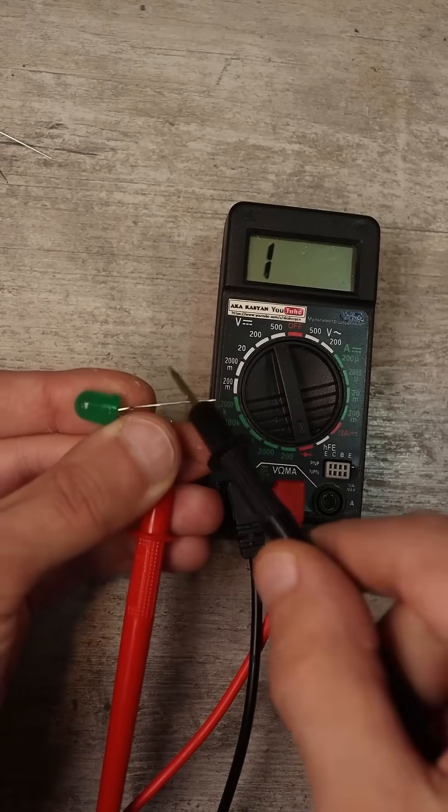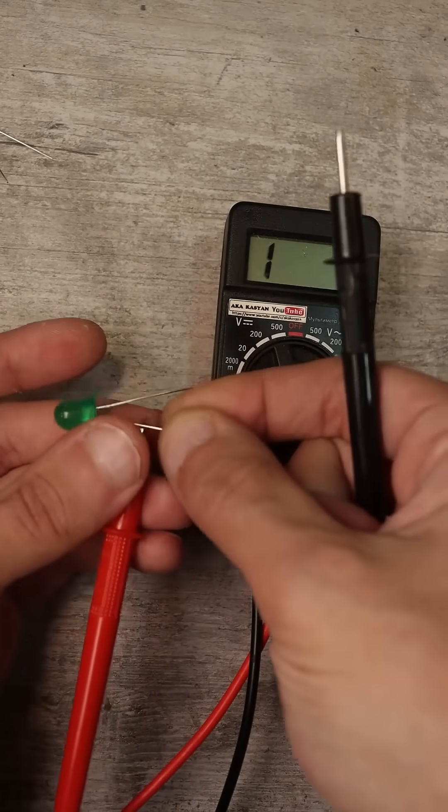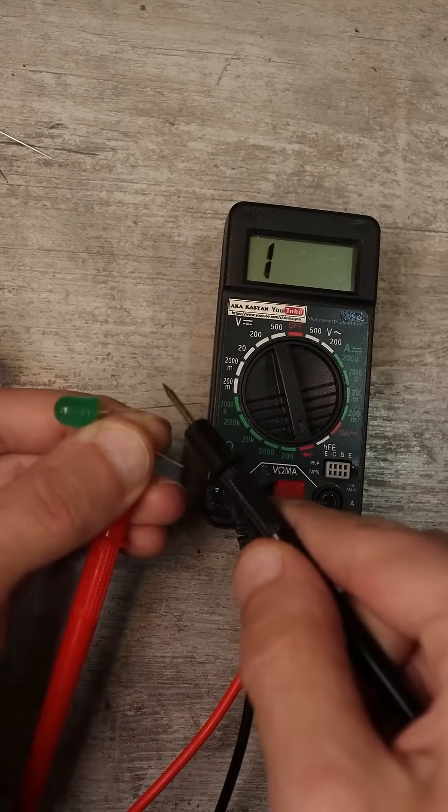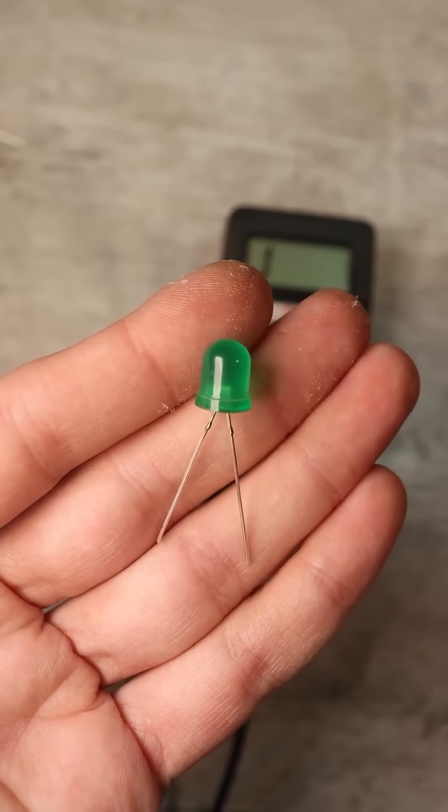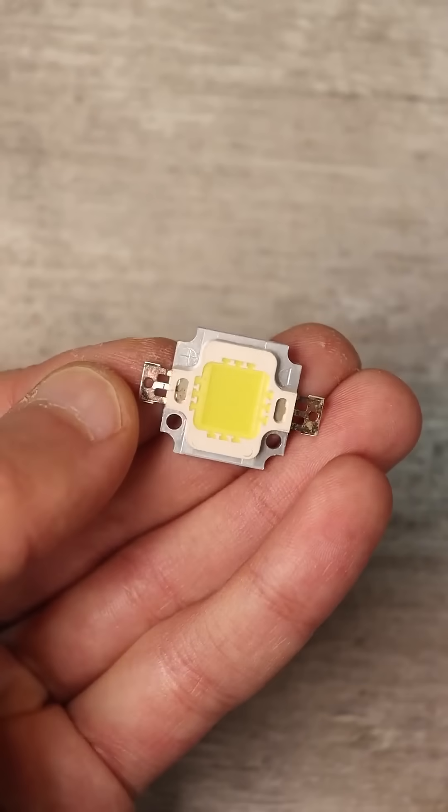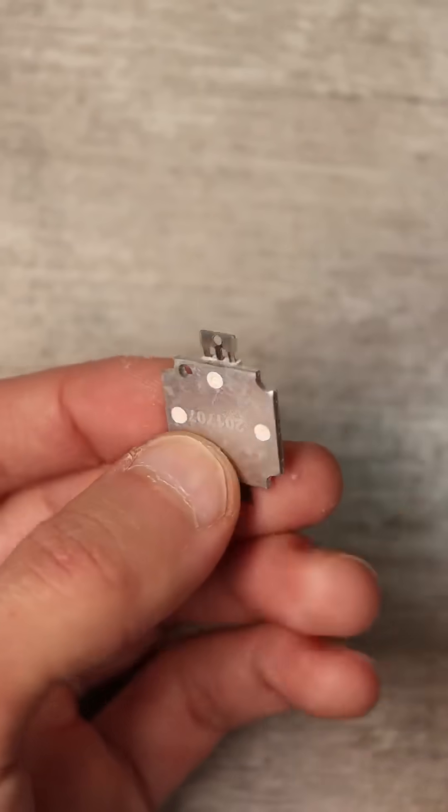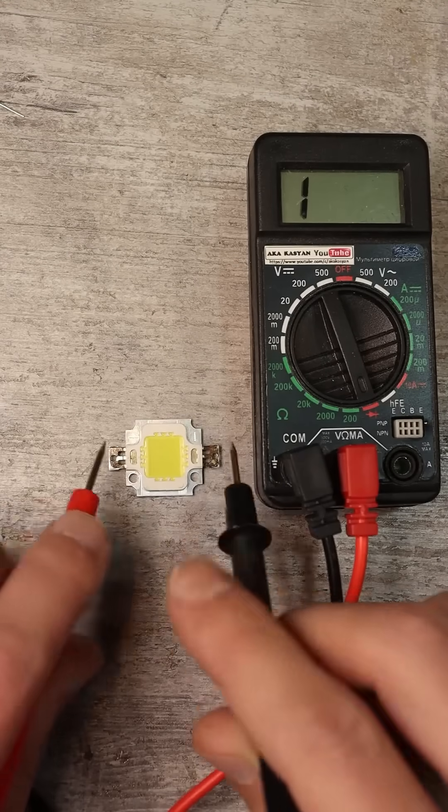If the LED does not light up regardless of the polarity, there are three possibilities. The multimeter probes have insufficient voltage, the LED is faulty, or you are holding not a single LED, but an LED matrix, which has a much higher operating voltage.